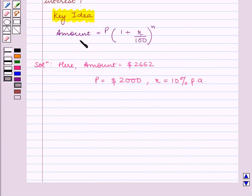As we know amount is equal to p into 1 plus r upon 100 raised to power n where we need to find the time n and the amount and the principal are given.